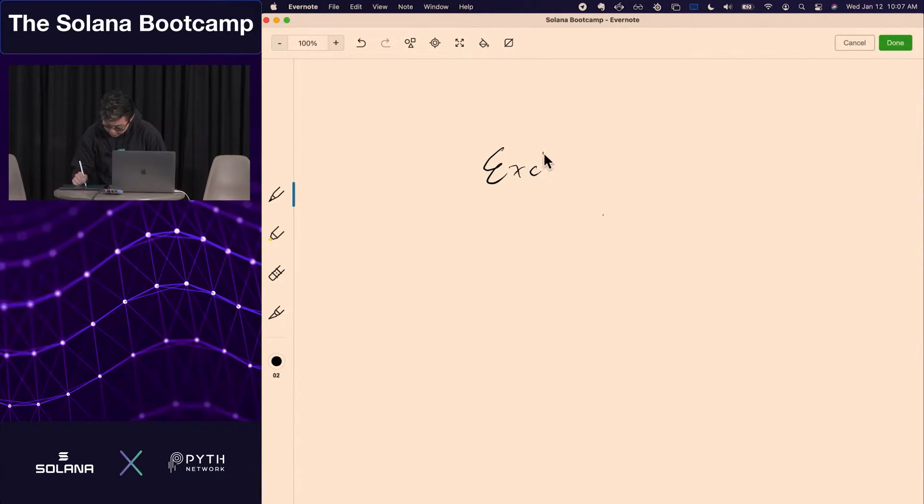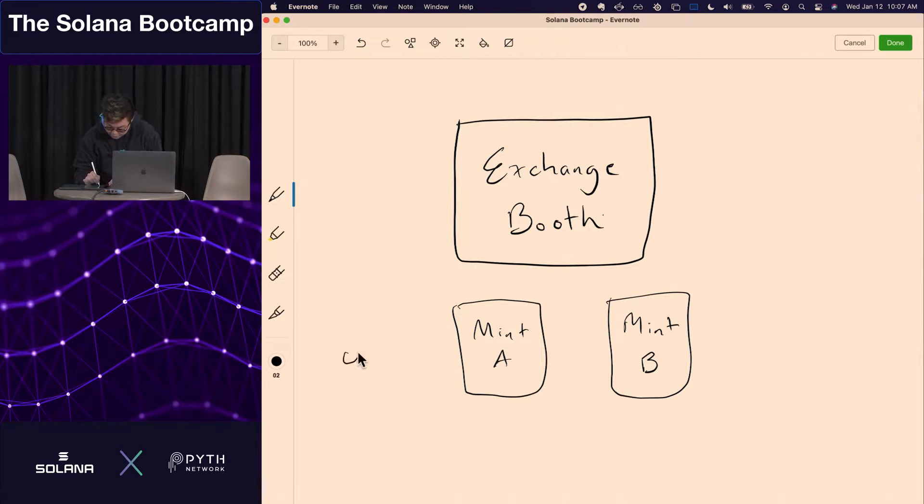So we have this exchange booth thing. This is going to allow a number of different features. The main thing is that this is going to store some token accounts that contain two mints. So you have mint A and mint B. There's a user. We'll call him the admin. This guy's the admin. And the admin can deposit tokens into both of these vaults. This admin also has the ability to withdraw. So red will be withdraw and green will be deposit.